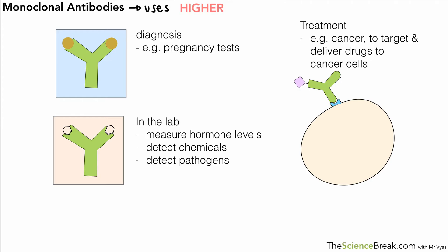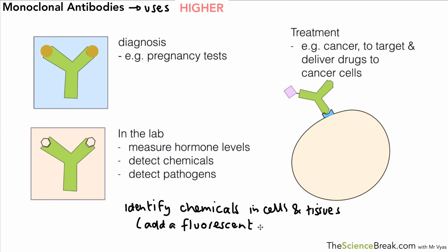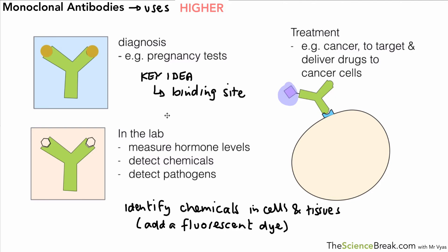A third use is treatment: a drug is attached to the monoclonal antibody, which will specifically find a cell with the target antigen and deliver that drug to that specific cell only. We can also identify chemicals present in cells and tissues — instead of a drug, a fluorescent dye is attached to the antibody, and its presence when we examine the cells or tissue tells us whether that particular chemical is there. The key idea is that monoclonal antibodies are specific to one particular protein antigen or molecule, giving them many uses in diagnosis, detecting chemicals or hormones, and treating diseases like cancer.